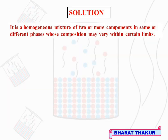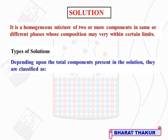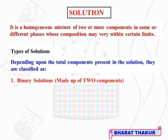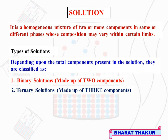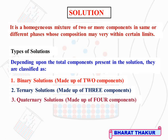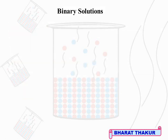A solution is a homogeneous mixture of two or more components in the same or different phases, whose composition may vary within certain limits. The types of solution depend upon the total number of components present. They are classified as binary solutions (made of two components), ternary solutions (made of three components), and quaternary solutions (made of four components). In our study we deal with binary solutions basically.